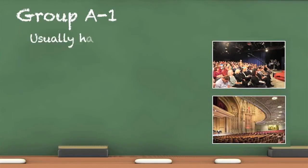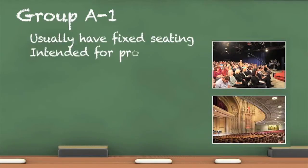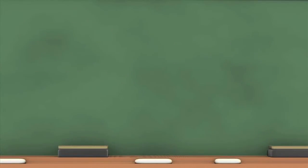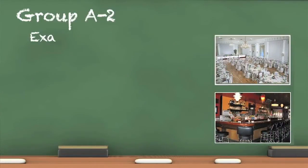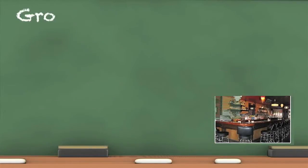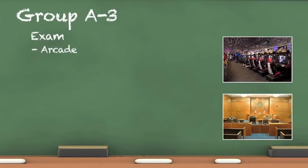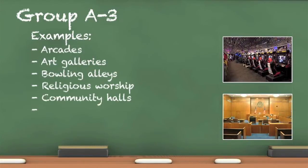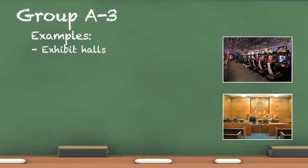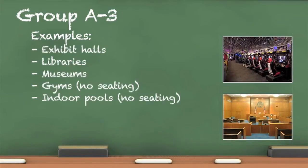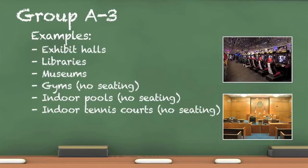Group A1 occupancies usually have fixed seating, a stage, and are designed for viewing plays, concerts, and filming for television shows. Group A2 occupancies are used for food and drink service and may or may not have a stage. Group A3 occupancies have myriad uses not covered in Groups A1 and A2. Note that Group A3 occupancies used for indoor sporting events do not have spectator seating.